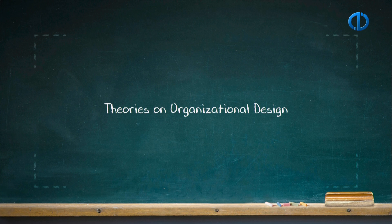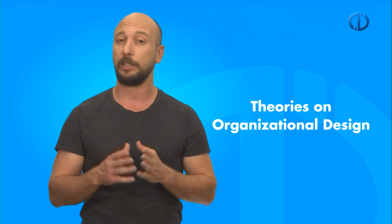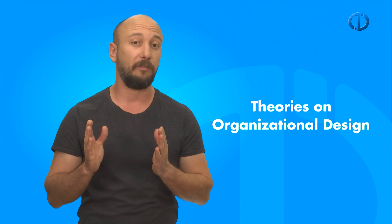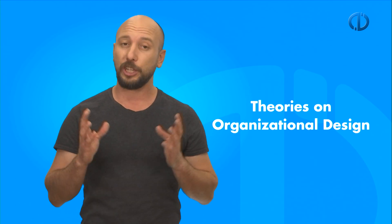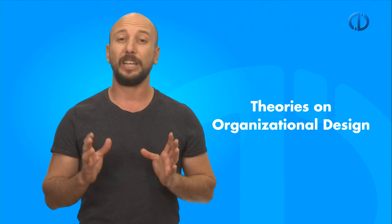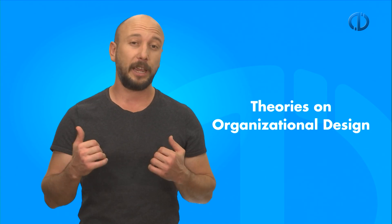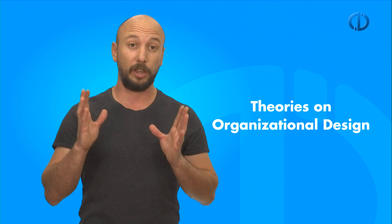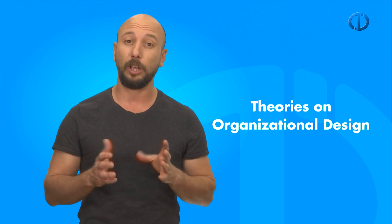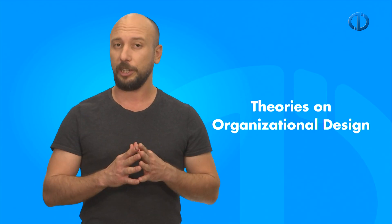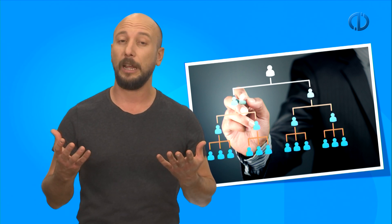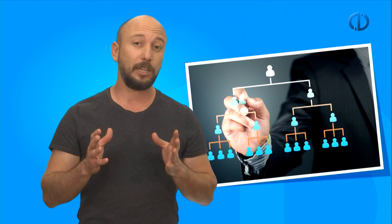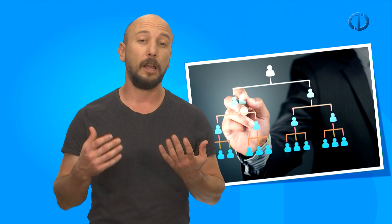Our last topic for today is theories on organizational design. As we mentioned in our first chapter, the Contingency Theory argues that to contribute to successful overall performance, how a company is organized must adjust the features of the environment, size, technology, and strategy. According to the Contingency Theory, there are two types of organizational design: the mechanistic and organic organizational designs. The effectiveness of each type of organizational design is dependent on the environment of the organization. Larger organizations tend to develop mechanistic designs, but with some degree of decentralization. They tend to adopt more formalized systems of control, whereas smaller ones tend to rely on personal relationships to maintain control.